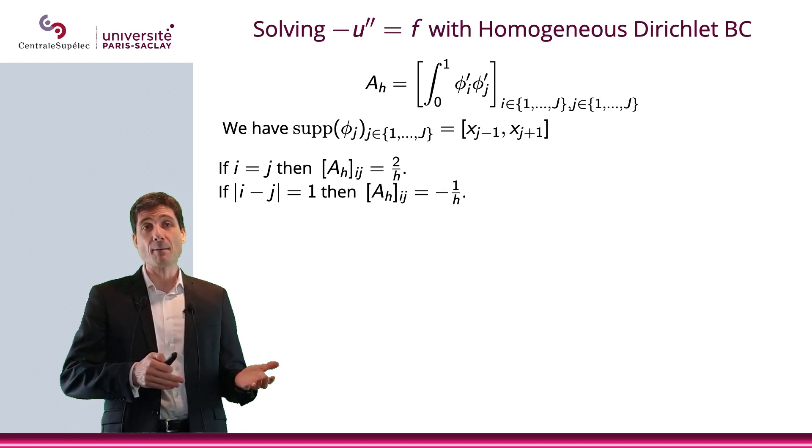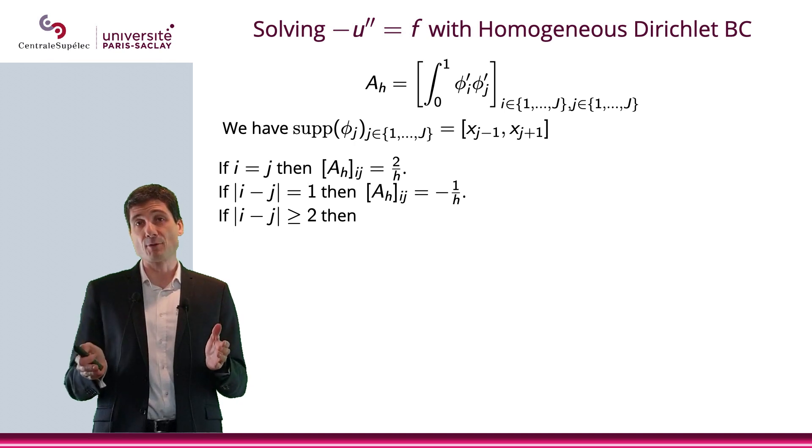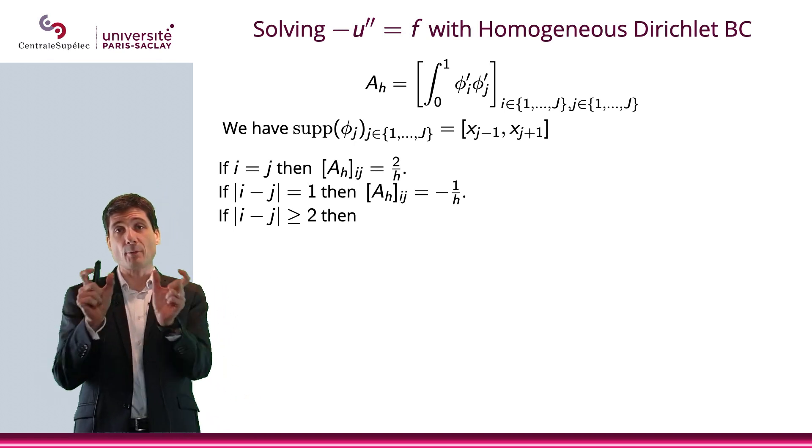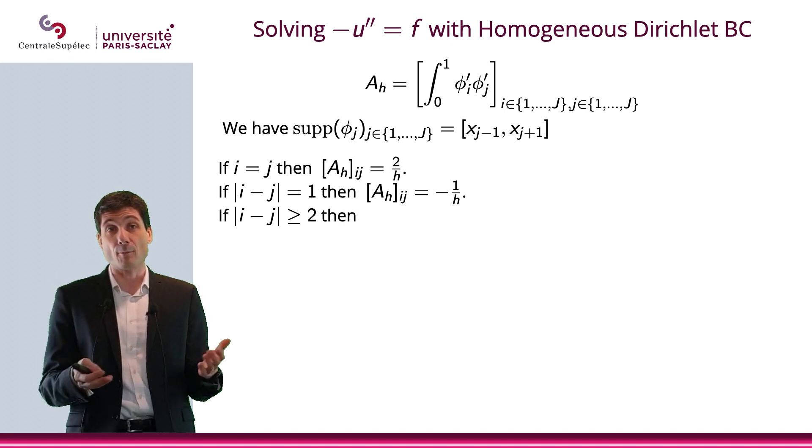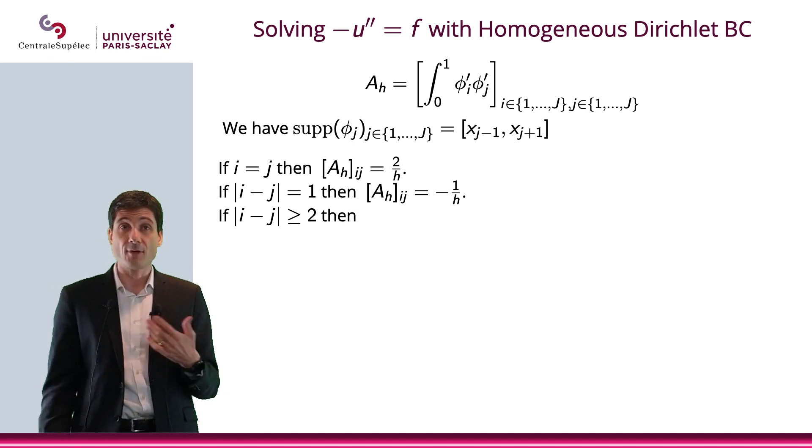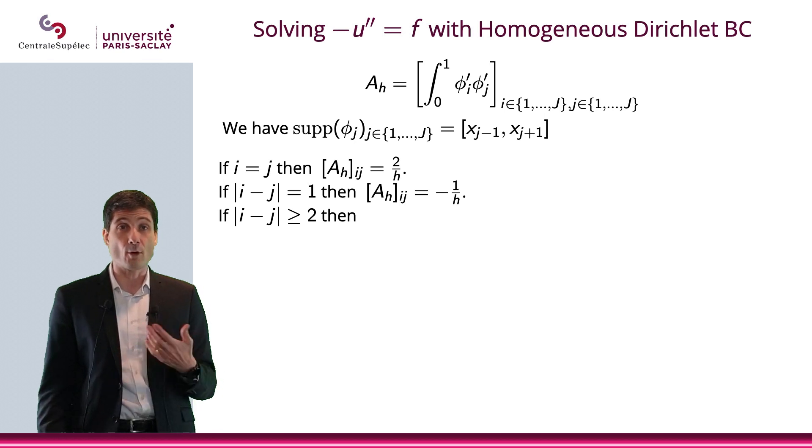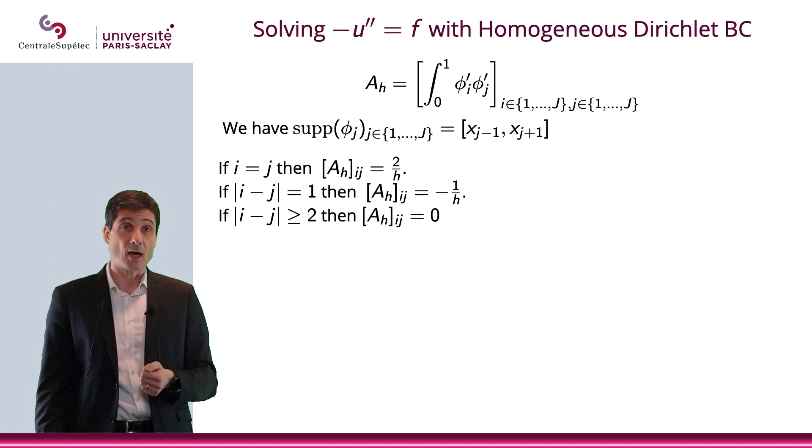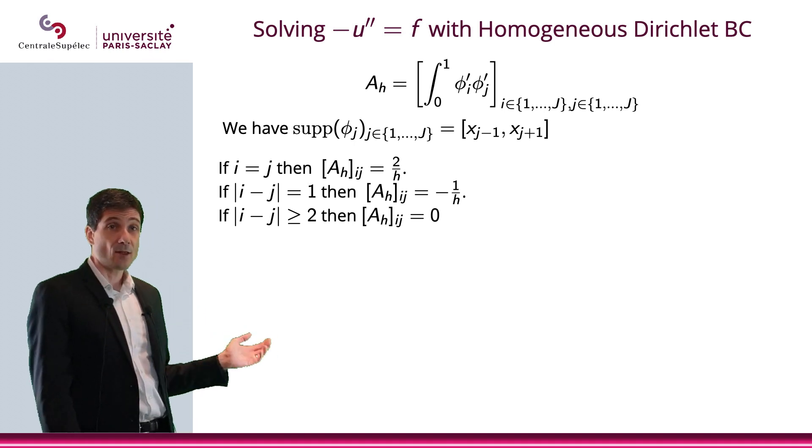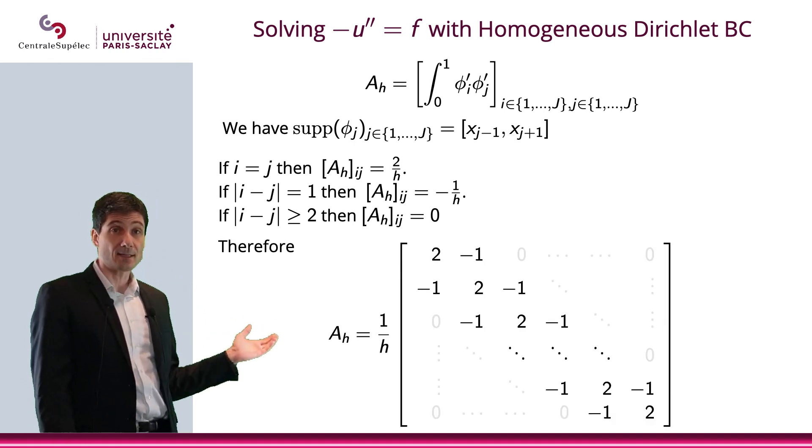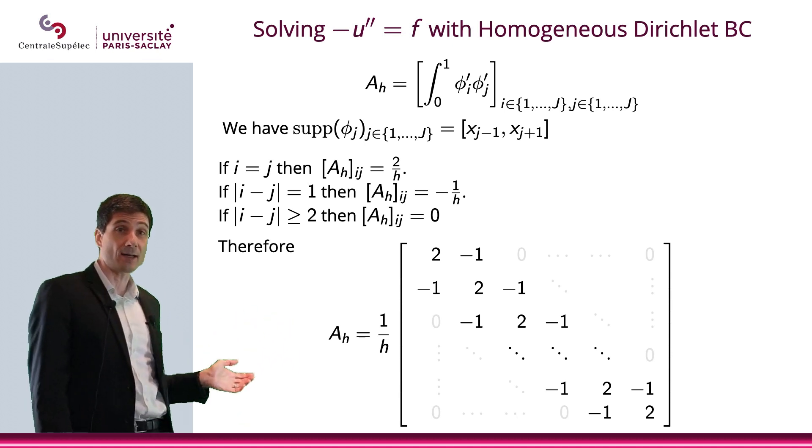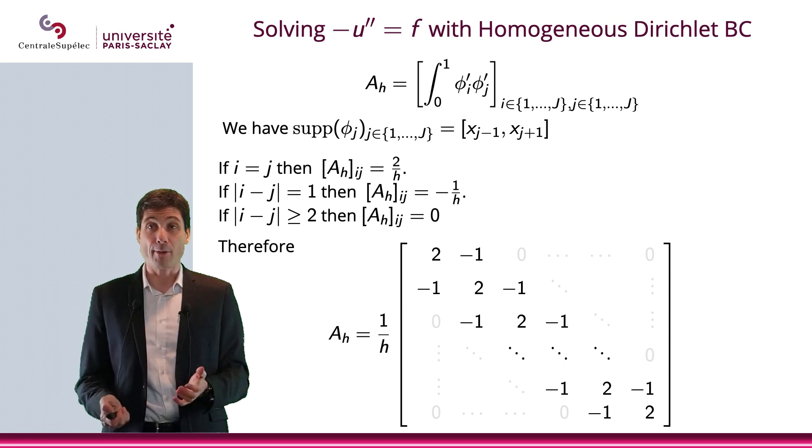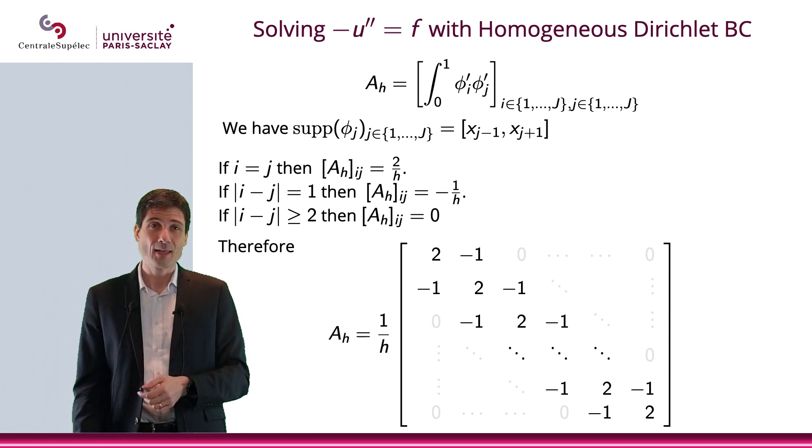Third case: |i-j| > 2. That really means that your two hat functions don't share any support. Therefore, the product of their derivative will be 0, so that basically is A_{h,ij}. So, eventually, what you get is the matrix A_h is simply this matrix with 2 on the diagonal, and then I get negative 1, and then I get negative 1, and then I get 0s everywhere else.